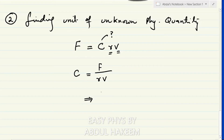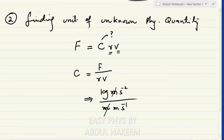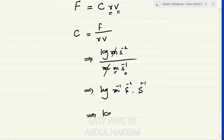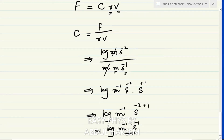Substituting units: F is kg·m·s⁻², r is meter, and v is m/s. So c = kg·m·s⁻² / (m × m/s). One meter cancels, the second comes up giving s⁻²⁺¹ = s⁻¹. The unit of c is therefore kg·m⁻¹·s⁻¹.